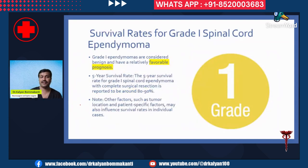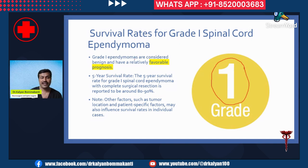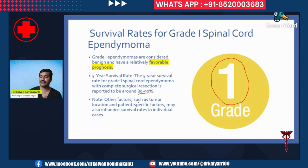For grade 1 tumors: grade 1 ependymomas are considered benign and have a relatively favorable prognosis. The 5-year survival rate for grade 1 spinal cord ependymoma with complete surgical resection is reported to be 80 to 90 percent. Other factors such as tumor location and patient-specific factors may also influence survival rates in individual cases.